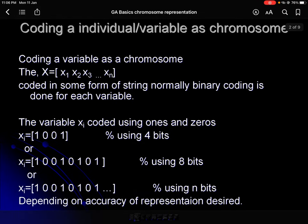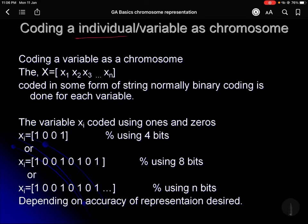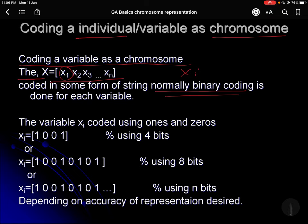A chromosome is basically a coding of an individual. So the individual is coded as a chromosome. If you have a variable x written as x1, x2, up to xn, then it can be coded in the form of a binary coding. You can use other kinds of coding also, but for now we are taking binary coding. So xi can be coded as a binary coding, for example using 4 bits.